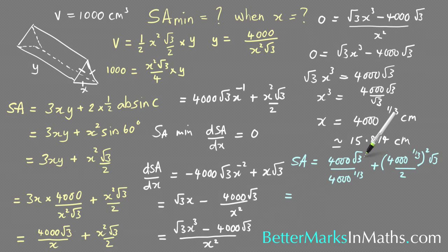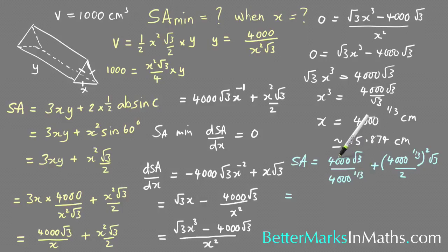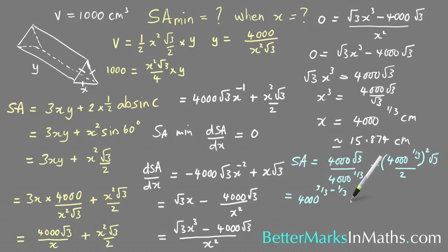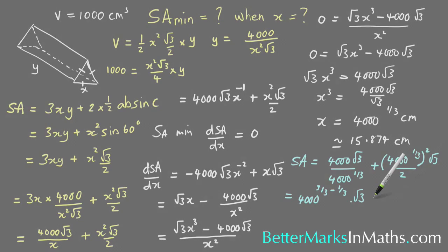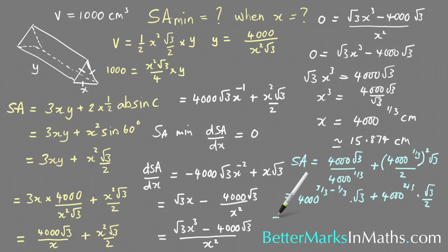Simplifying using index laws: 4000 written as 4000 to the three-thirds divided by 4000 to the one-third gives 4000 to the two-thirds, all times root 3. For the second term, squaring 4000 to the one-third means multiplying the powers to get 4000 to the two-thirds, times root 3 over 2.